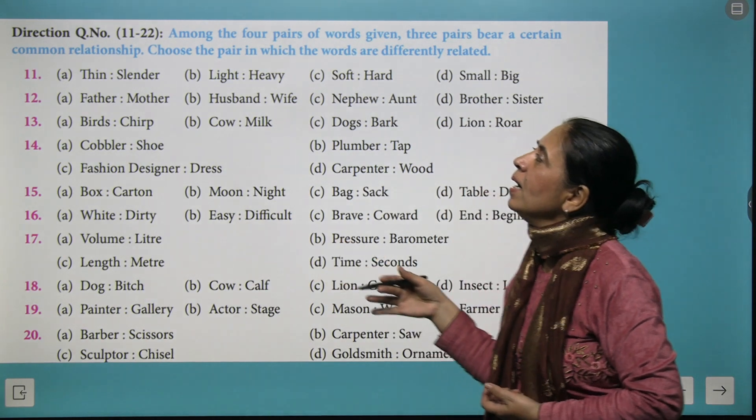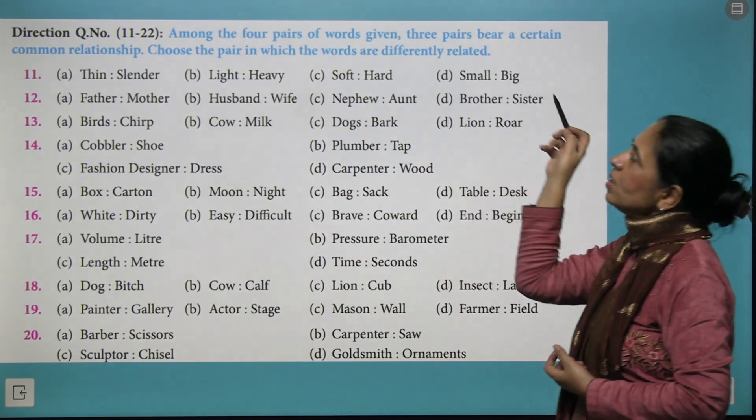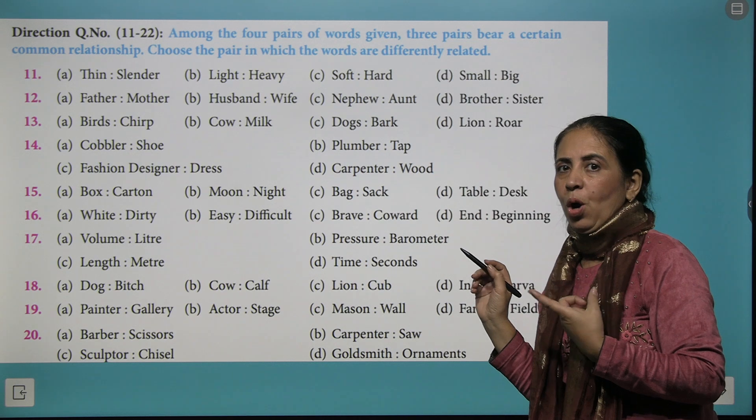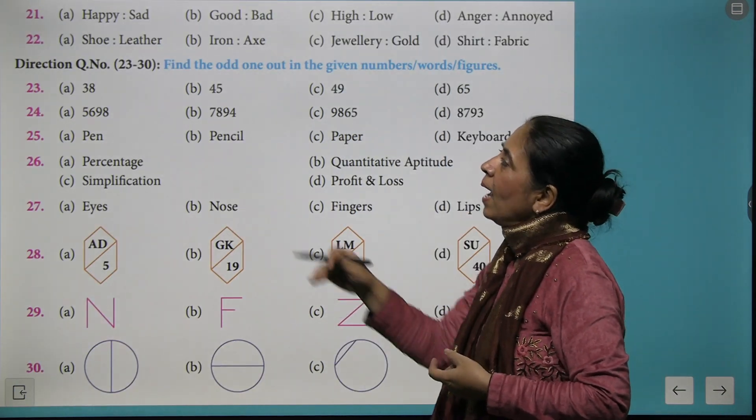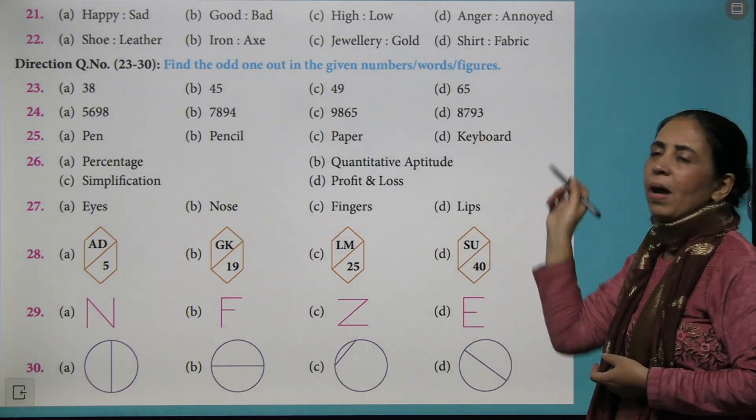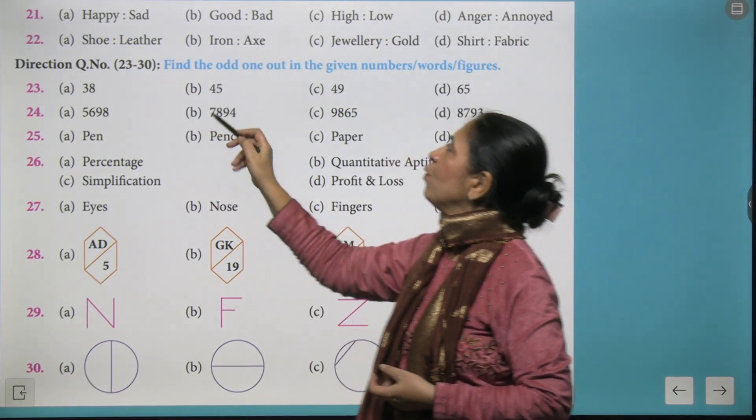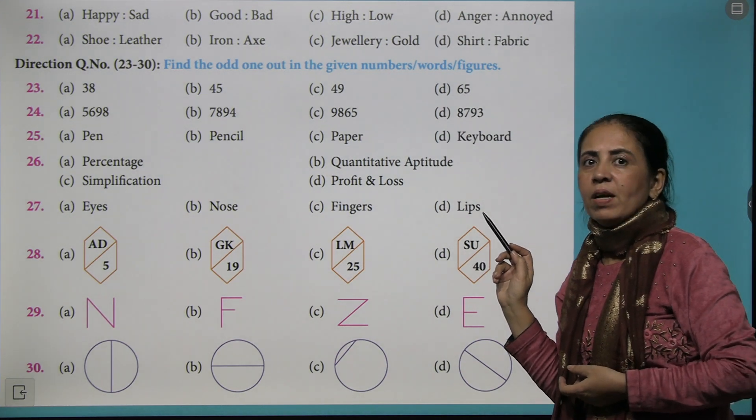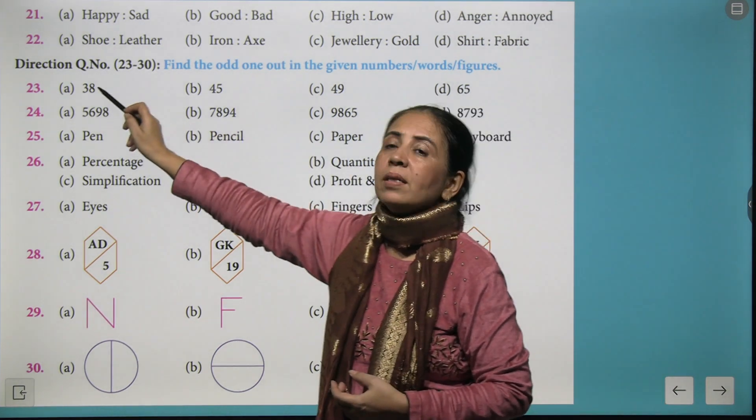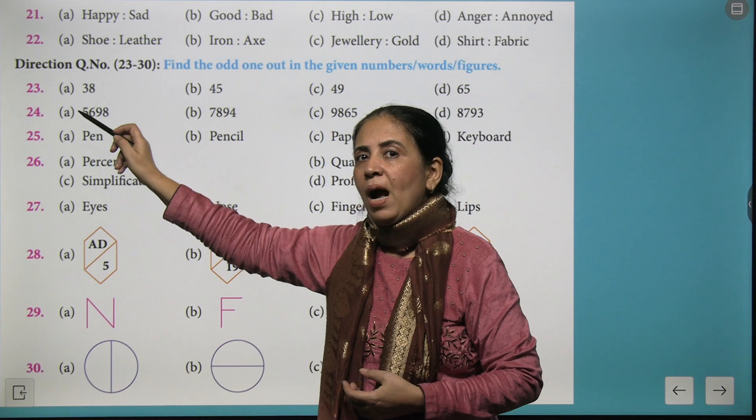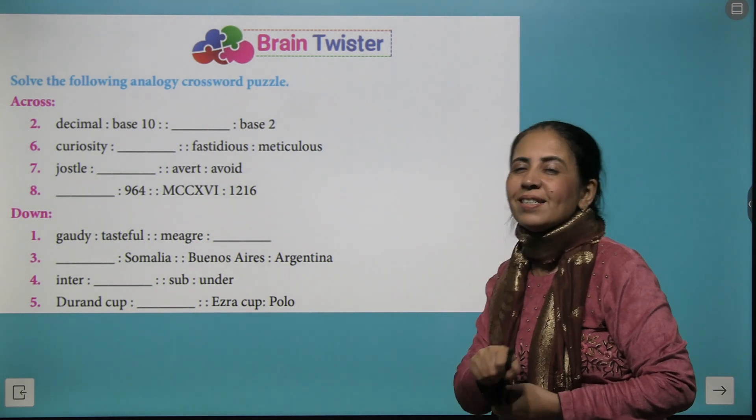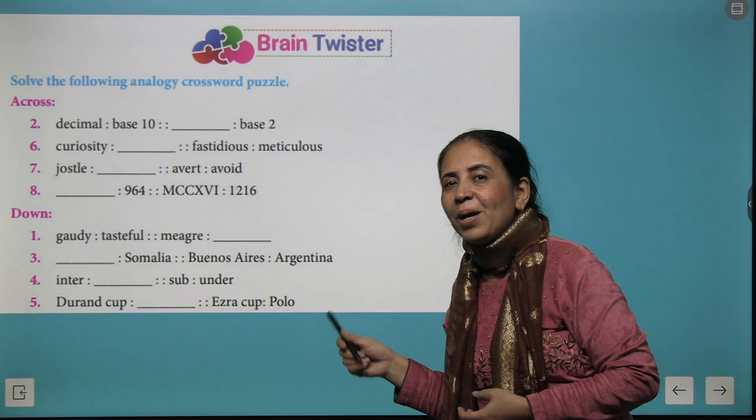Now more questions are there where you have four combinations and you need to just see that which of these four combinations have one odd combination. That will be your answer. And in the next category of question we have to find the odd one in the given numbers words or figures. So the first one is 38, 45, 49 and 65. So could you see that we have three numbers which are odd numbers and 38 is even number. So that becomes your answer. And in this way every question requires your little extra effort to make you outshine.